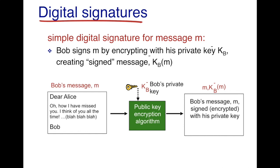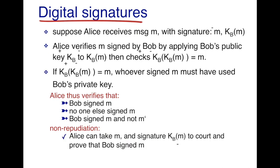Once Alice receives this plaintext message as well as this encrypted message, she can verify if this document was actually signed by Bob. When Alice receives the plaintext message M as well as the encrypted message KB(M), she applies Bob's public key to the encrypted message and is able to recover a plaintext message. She compares the plaintext message M with this decrypted message, and if these two messages are the same, she verifies that it is Bob who signed the original document.